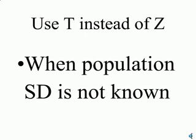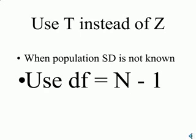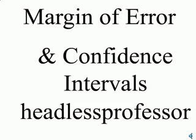We're going to have to use a t instead of z in many cases — when the population standard deviation is not known and all we really have is a sample standard deviation to use as an estimate. In this situation, we would use the t table, and we have to use the df row of n minus 1. This has been another Headless Professor video on margin of error and confidence interval estimates.